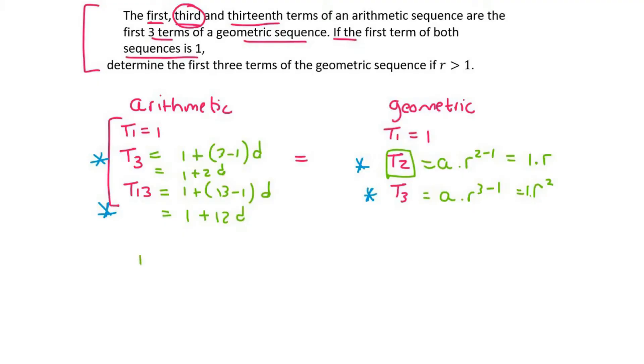So we can say that 1 plus 2d is the same as r. The reason I say that is that they said that this term is the same as this term. Then my other equation that I could say is 1 plus 12d is the same as r squared, because this must be the same as this. They told us that. And so here we have it guys. We can use simultaneous equations on these two.